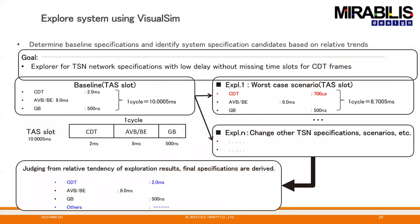When exploring configurations, the baseline was 10 milliseconds, then we tried 8.7 milliseconds with the 700-microsecond CDT slot. What we found is that 2 milliseconds and 8 milliseconds is what really worked. The worst-case scenario completely failed because CDT packets could not get through and had to wait for the whole cycle to repeat.